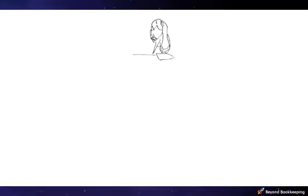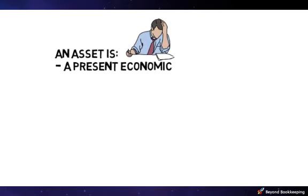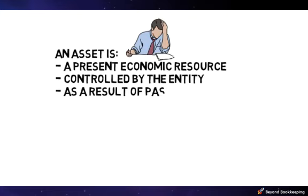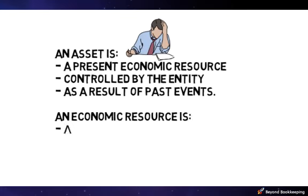To help you make this decision though, accountants have agreed on a generally accepted definition of an asset. An asset is a present economic resource controlled by the entity as a result of past events. An economic resource is a right that has the potential to produce economic benefits.